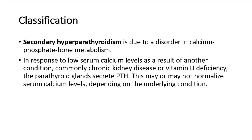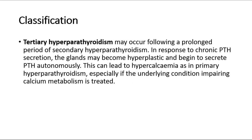Secondary hyperparathyroidism is due to a disorder in calcium-phosphate-bone metabolism. In response to low serum calcium levels as a result of another condition — commonly chronic kidney disease or vitamin D deficiency — the parathyroid glands secrete PTH. This may or may not normalize serum calcium levels, depending on the underlying condition. Tertiary hyperparathyroidism may occur following a prolonged period of secondary hyperparathyroidism; the glands may become hyperplastic and begin to secrete PTH autonomously, leading to hypercalcemia, especially if the underlying condition impairing calcium metabolism is treated.